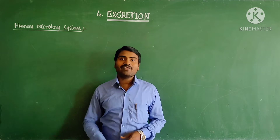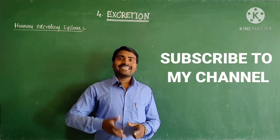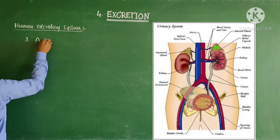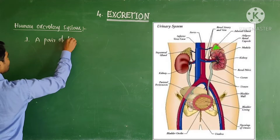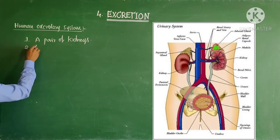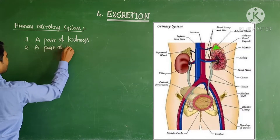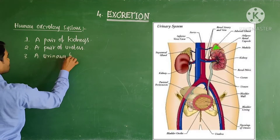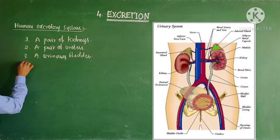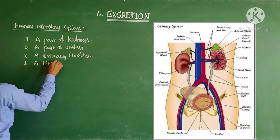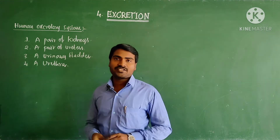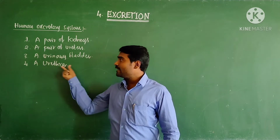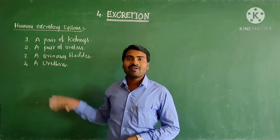Excretion occurs by a special system called the excretory system. It is formed by a pair of kidneys, a pair of ureters, a urinary bladder, and finally a urethra. So these are the 4 important parts which make our excretory system.